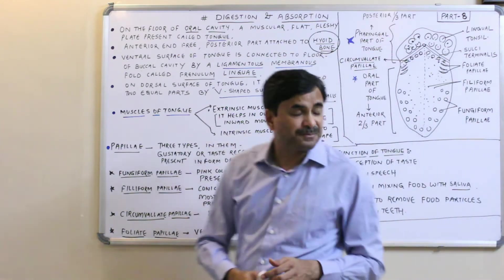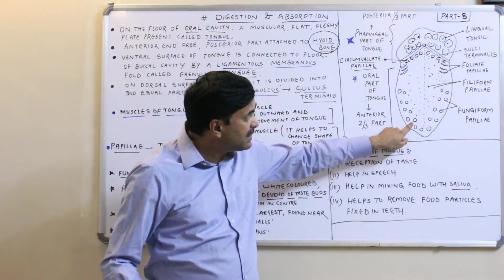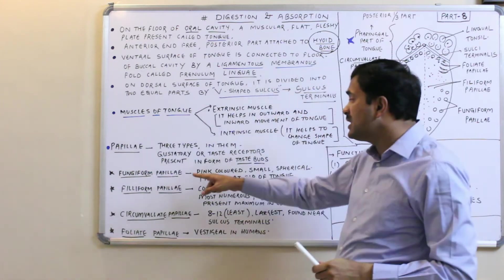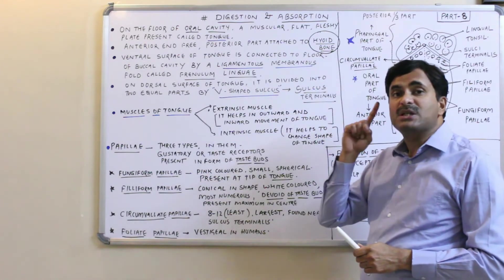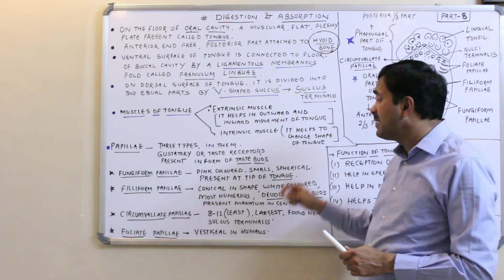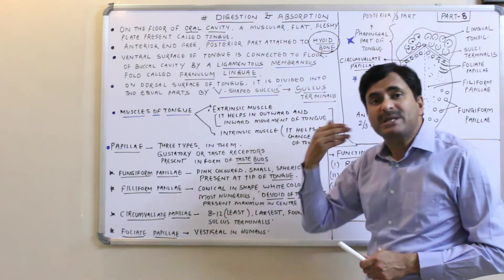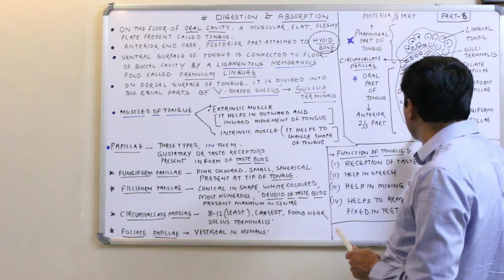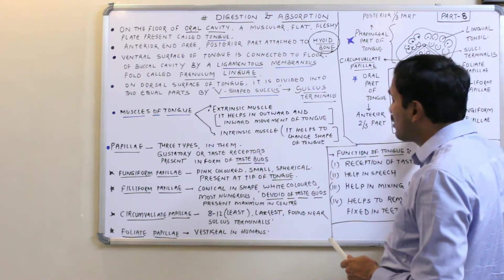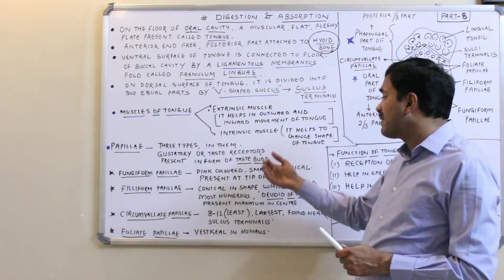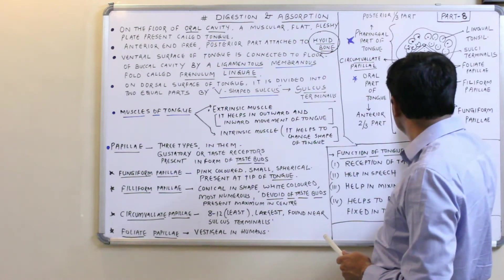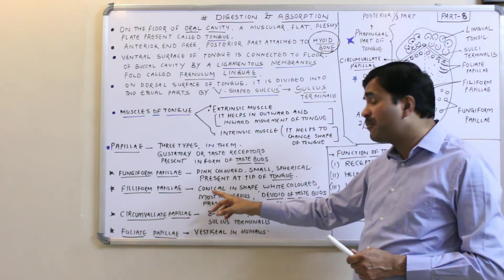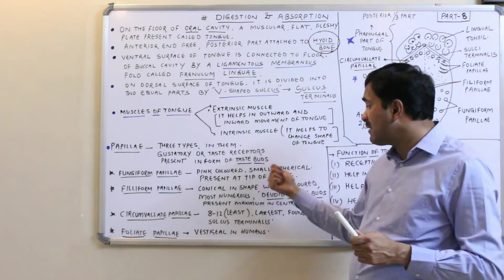The first are the fungiform papillas, found especially at the anterior part of the tongue. These fungiform papillas are pink colored, small in size, and spherical. They are prominently found at the tip of the tongue but also on other parts, with more numbers at the anterior part. At the center of the tongue, the filiform papillas are found. Filiform papillas are conical in shape, while fungiform papillas were spherical.